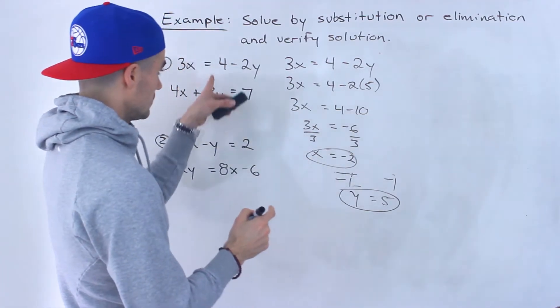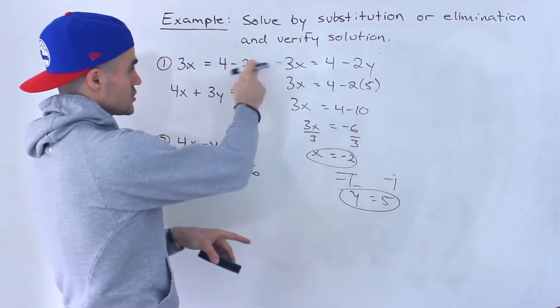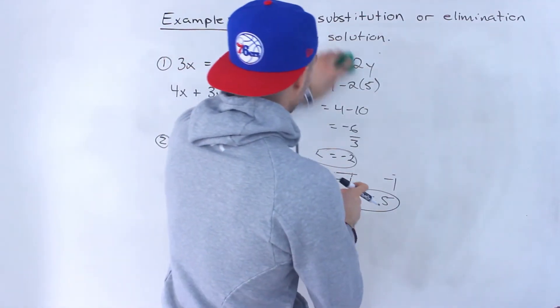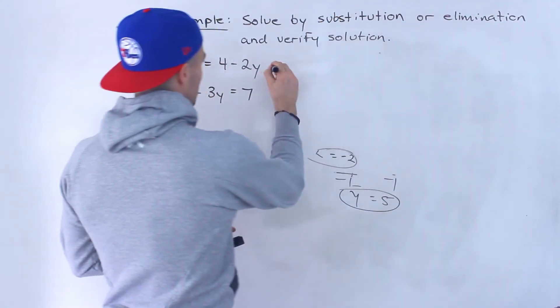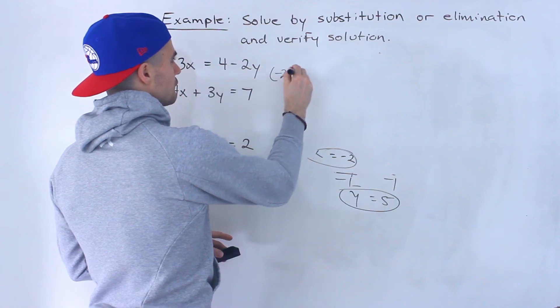So the solution, the point at which these two lines intersect would be negative 2 and 5.